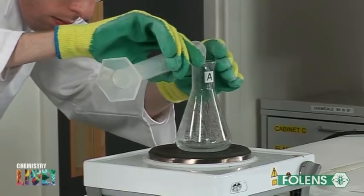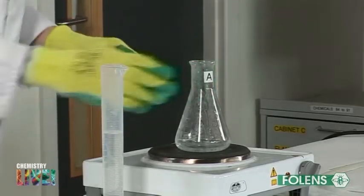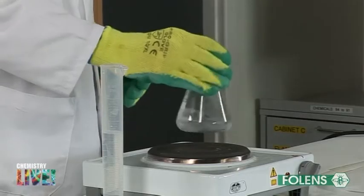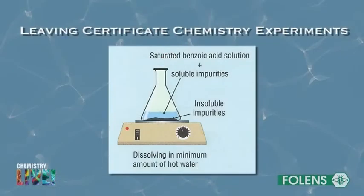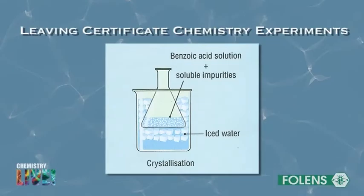That is, until you can no longer see any of the white solid. Benzoic acid can be purified by recrystallisation from water because it is very soluble in hot water but only slightly soluble in cold water. The known mass of the impure benzoic acid is dissolved in the minimum amount of boiling water in order to get a solution which is saturated at the boiling point of the solvent — that is, the boiling water contains the maximum amount of dissolved benzoic acid. As a result, crystals will form on cooling and the yield obtained will be maximised.